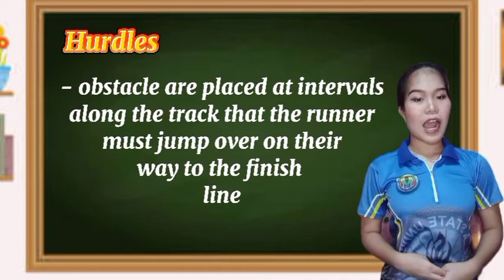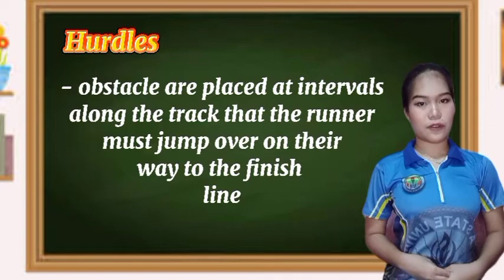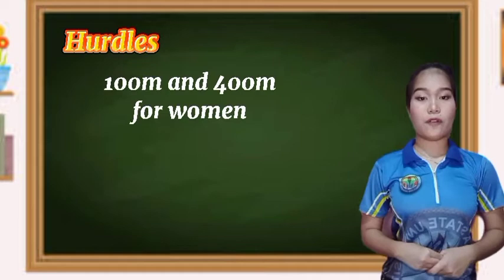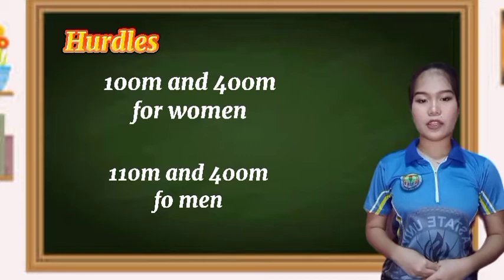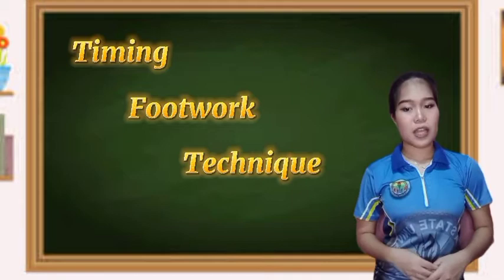Hurdles. A hurdles race is one in which obstacles are placed at intervals along the track that the runner must jump over on their way to the finish line. Typical hurdle races are the 100-meter and 400-meter for women, and the 110-meter and 400-meter for men. Timing, footwork, and technique are the key to winning hurdle events. Of course, you still need to be fast, but jumping the hurdle smoothly without slowing down is how to win in the hurdles.